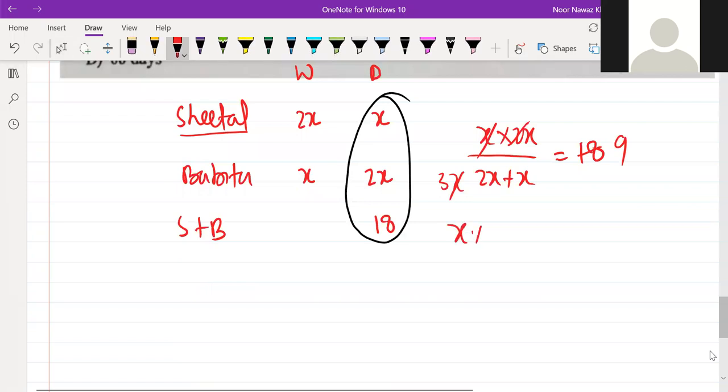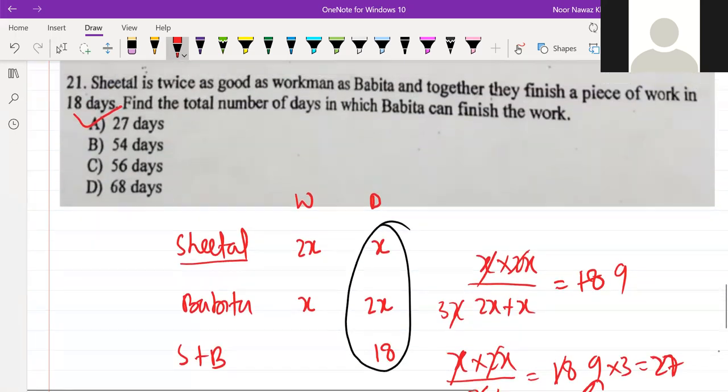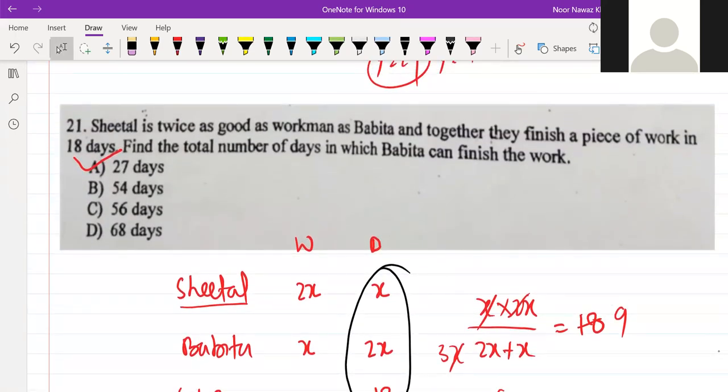x into 2x upon 3x is equal to 18, so x is equal to 9 and 2x is equal to 27. Do you understand? So the answer is 27 days.